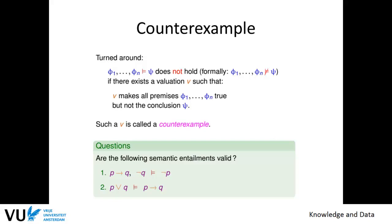Conversely, entailment does not hold if there exists a valuation where all premises are true but the conclusion is false — such an assignment is called a counterexample. As a quiz, you can check using truth tables whether these entailments are valid: first, 'P implies Q' and 'not Q' entails 'not P'; second, 'P or Q' entails 'P implies Q.'